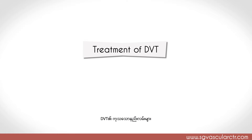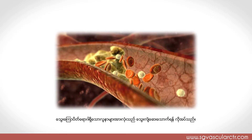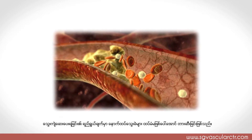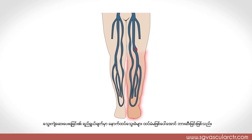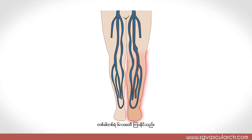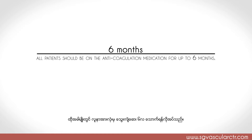Treatment of DVT: all patients with DVT must be started on blood thinning medication — anticoagulation. The objective of anticoagulation is to prevent more new blood clots from forming. The body usually helps in dissolving the existing vein blood clots over time, sometimes up to six months. As such, all patients should be on anticoagulation medication for up to six months.